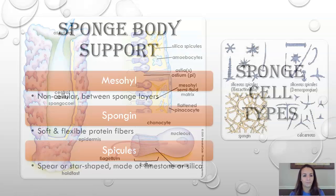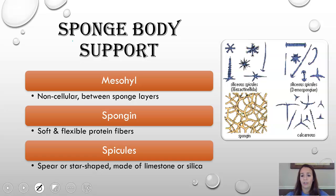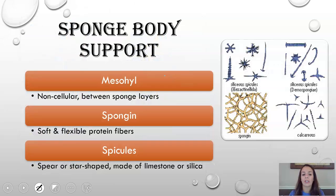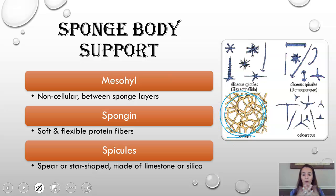When we talk about sponge body support, there are three different structures to be aware of. The first is the mesohyl — it is non-cellular and sits between the two sponge layers. All the light yellow in the diagram — that's all your mesohyl. It's kind of like a cytoplasm in a cell, but in the sponge body itself between layers. The spongin gives sponges that soft, flexible structure — if you've ever found a sponge on the beach, the spongin is what gives it that feel, looking like a big interwoven web.